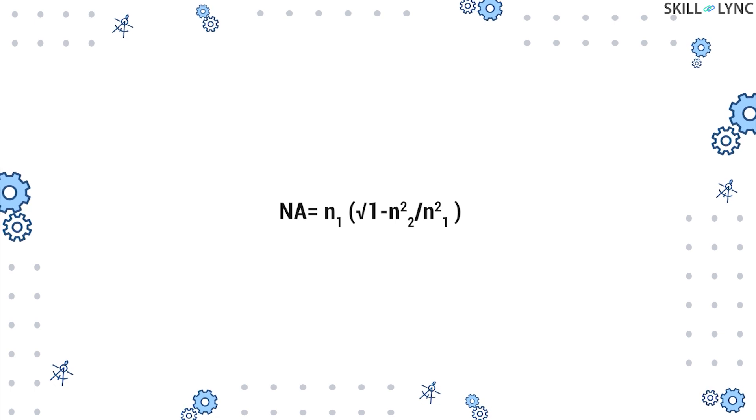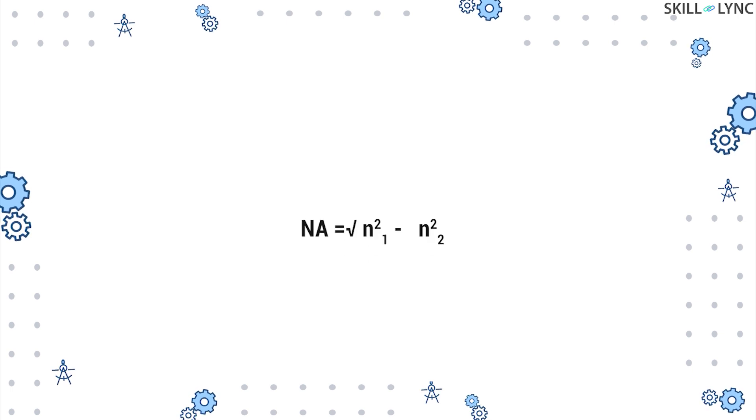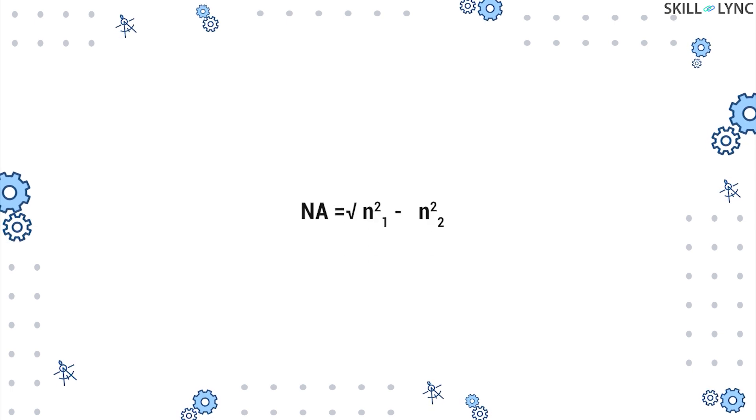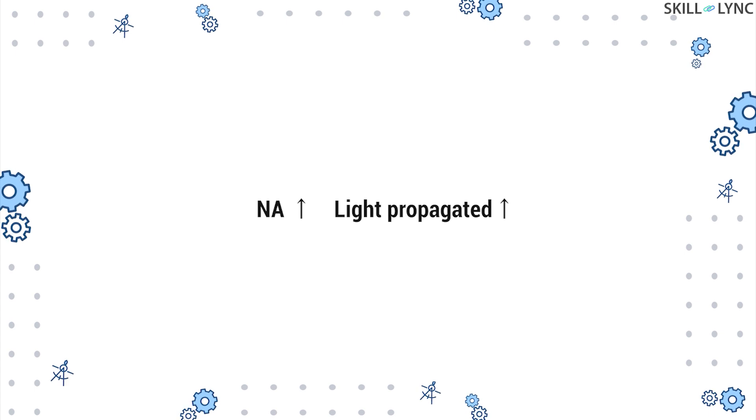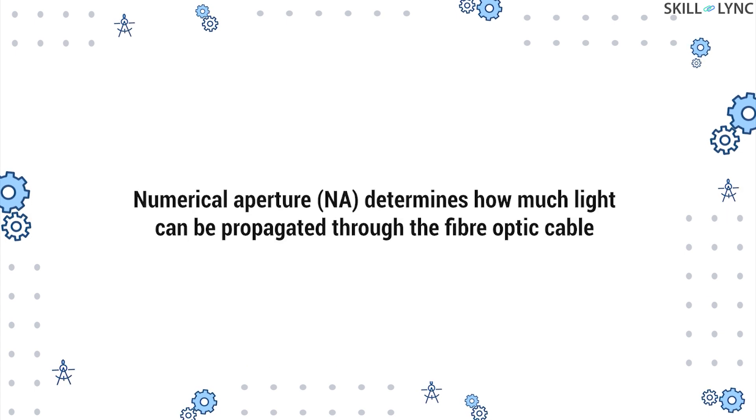After making the necessary rearrangements, we get NA = √(n1² - n2²). The higher the value of NA, the more light is propagated. The numerical aperture is used to determine how much light can be propagated through the fiber optic cable.